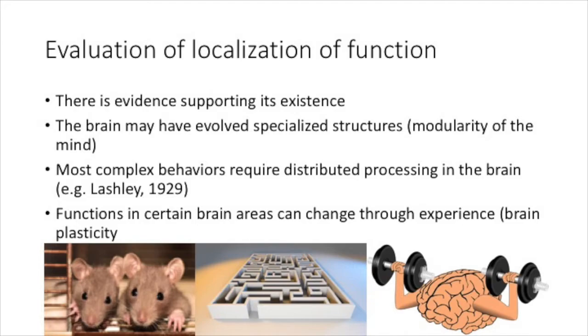However, the existence of neural networks for brain functions also comprise a problem for localization of function. Usually such neural networks connect with more than one brain region. Therefore, although strict localization may exist for simple behavior, such as the perception of color and motion, most complex behaviors require distributed processing throughout the brain. This was, for example, demonstrated by a seminal study by Lashley in 1929.